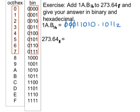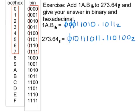Now for the octal number, we replace each digit with its three-digit binary equivalent: 2 is 010, 7 is 111, 3 is 011. Put in the fractional point, 6 is 110, and 4 is 100, and that's in base 2. Again, removing the first zero and the last two zeros doesn't affect the size of the number.